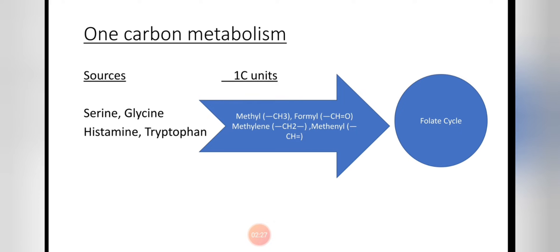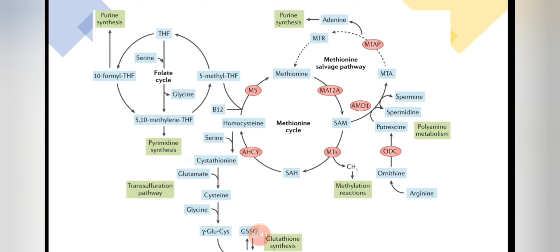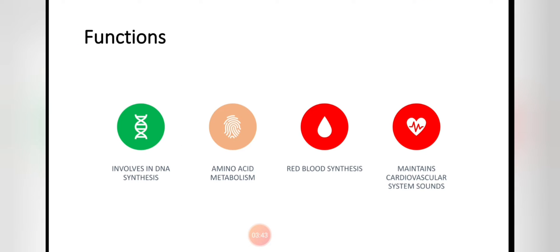Once folate gains its one carbon units from amino acids, it drives two important cycles: the folate cycle and the interlinked methionine cycle. These two cycles are essential because their intermediate products are necessary for DNA formation, red blood cell synthesis, and maintaining a healthy cardiovascular system. Thus, folate is essential for DNA synthesis, amino acid metabolism, red blood cell synthesis, and cardiovascular maintenance.